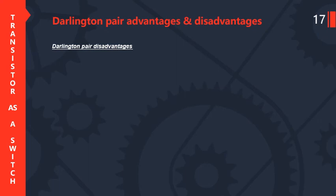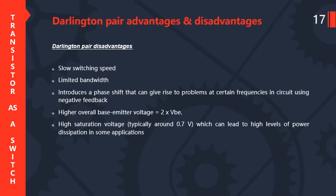Disadvantages of the Darlington pair: the switching speed is slow and it has limited bandwidth, introducing a phase shift that can cause problems at certain frequencies in circuits using negative feedback. It has a higher overall base-emitter voltage equal to 2·VBE. It has a high saturation voltage, typically around 0.7V, which can lead to high levels of power dissipation in some applications, generating significant heat due to the high current gain.